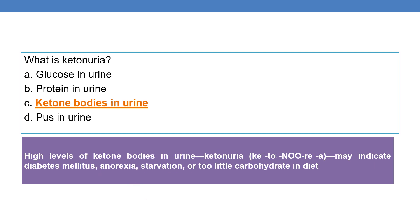Next question: what is ketonuria? The presence of ketone bodies in the urine is called ketonuria. High levels of ketone bodies in the urine may indicate diabetes mellitus, anorexia, starvation, or too little carbohydrate in the diet.